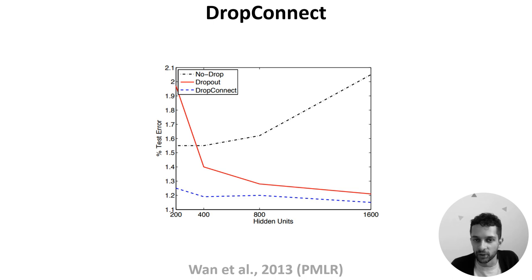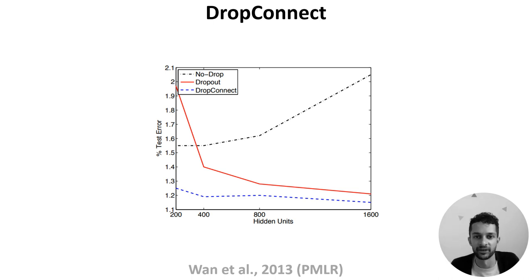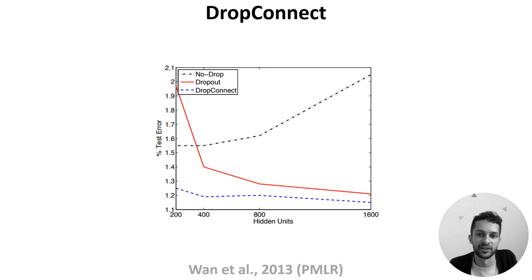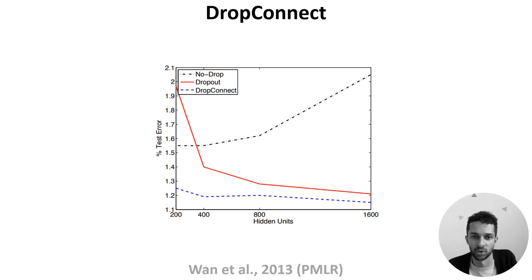To give a quick comparison between the two, the graph shows the test error on MNIST as a function of network size. With no dropout in black, the error increases with size as the networks increasingly overfit the data. With dropout in red, the error decreases with size. With DropConnect in blue, the error is lower and more stable. The paper provides more empirical and theoretical results suggesting that DropConnect may be advantageous compared to dropout.